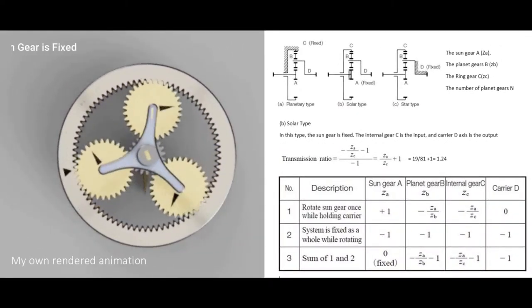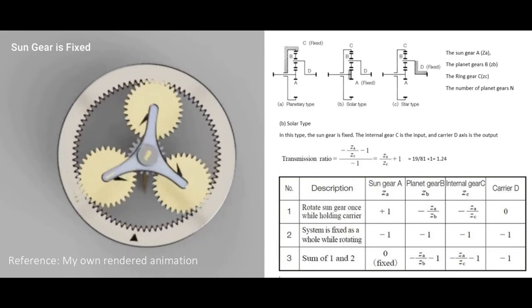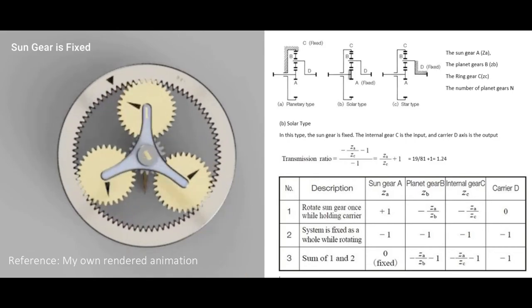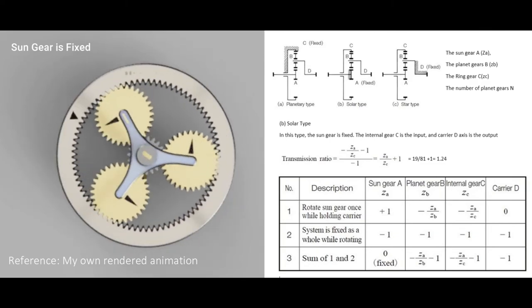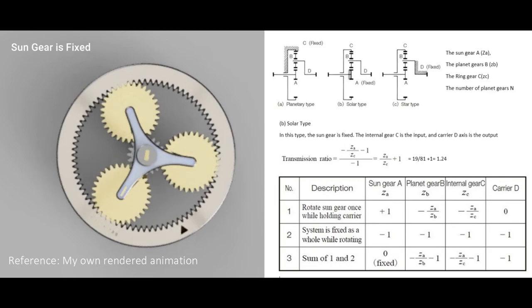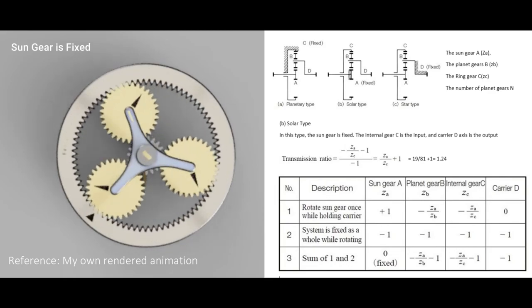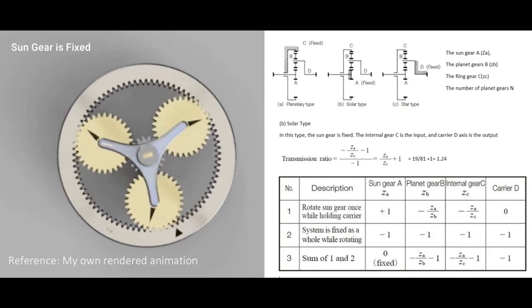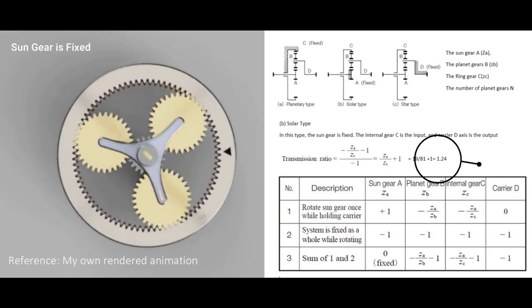The last configuration is the solar type. In this type, the sun gear is fixed. The ring gear C is the input and the carrier D axis is the output. The speed ratio is calculated as in the table. Note that the directions of the rotation of input and output axis are the same. In our case, as calculated, the transmission ratio is 1.24.